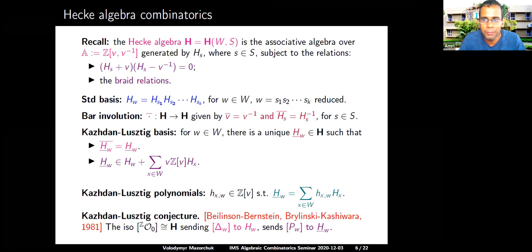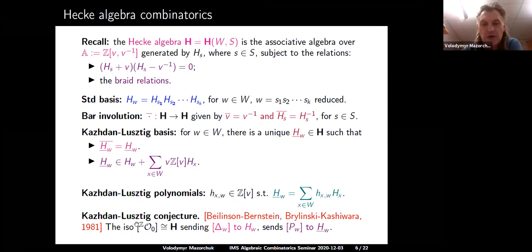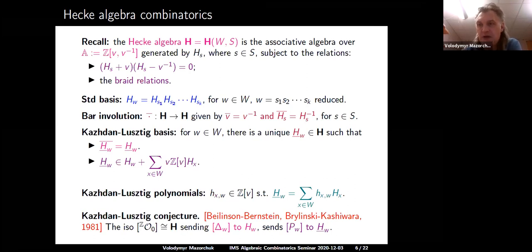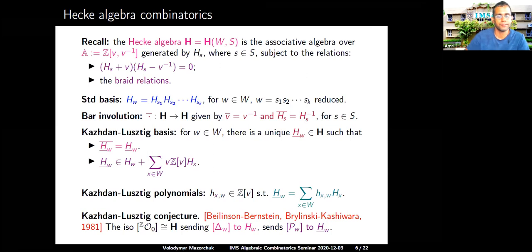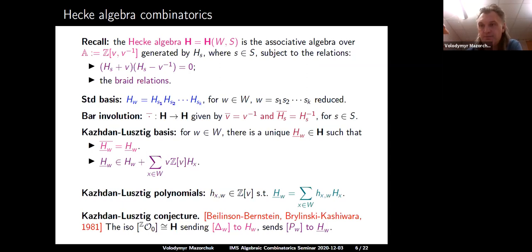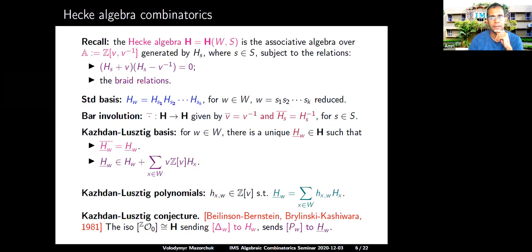One can clarify the role of v: there is a graded lift of Category O, and v corresponds to the shift of grading automorphism. If you forget v (set v = 1), you get the usual Grothendieck group and the integral group ring of the Weyl group instead of the Hecke algebra.